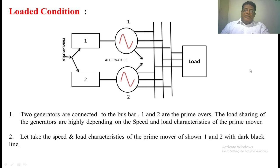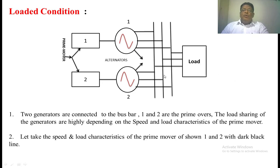Now we come to the loaded condition. We again take two generators, generator 1 and generator 2, with prime mover 1 and prime mover 2. This is the infinity bus where we are maintaining the voltage constant. From this bus, we supply the load. The load shared by the two generators is highly dependent upon the speed-load characteristics of the prime movers. The prime mover is the one which provides mechanical output to the generator.